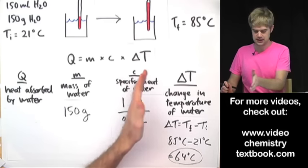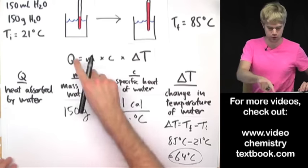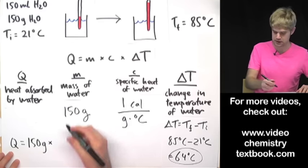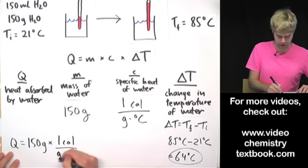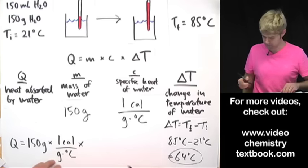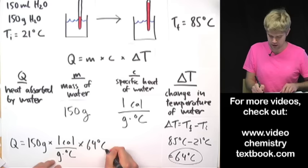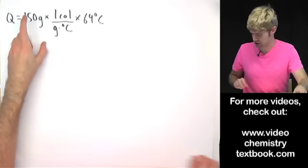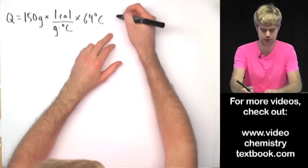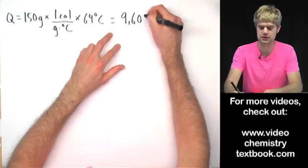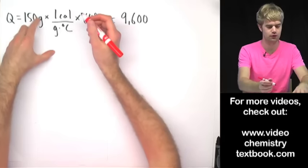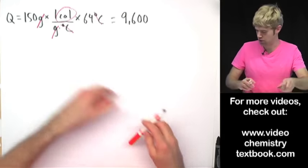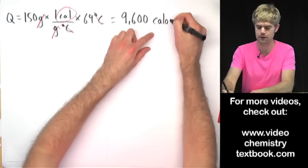Now we have M, C, and delta T, so we can plug these into the equation. Q equals M — 150 grams — times C — 1 calorie per gram per degree Celsius — times delta T — 64 degrees Celsius. Multiplying through: 150 times 1 times 64 gives us 9,600. For units: grams cancel with grams, degrees Celsius cancel, leaving us with calories. So Q equals 9,600 calories.